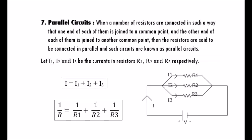Parallel circuits: when a number of resistors are connected such that one end of each is joined to a common point and the other end is joined to another common point, the resistors are said to be connected in parallel. In these circuits, current is divided into as many parts as the number of resistors. The equivalent resistance is given by: 1 over R equals 1 over R1 plus 1 over R2 plus 1 over R3.